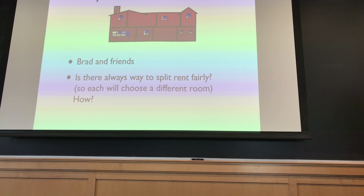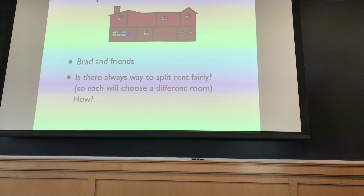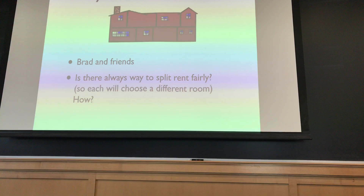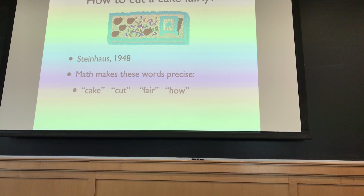The starting point for the questions I want to talk about came to me in graduate school. I was sitting with a friend who had just moved into a house with three roommates. The rooms had different features — one was large but noisy, another small but quiet, another next to the kitchen. He asked me: is there always a way to price the rooms so that each person would choose a different room? In other words, is there always a way to split the rent fairly — a rental harmony?